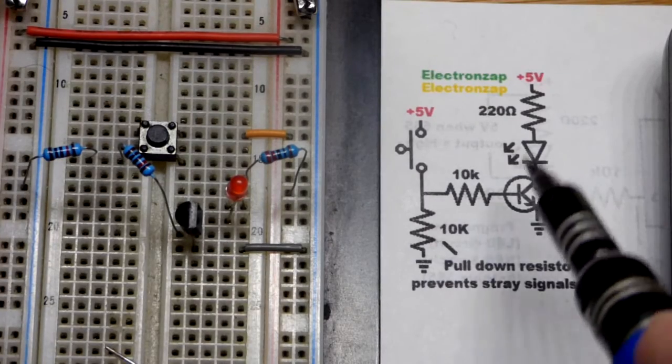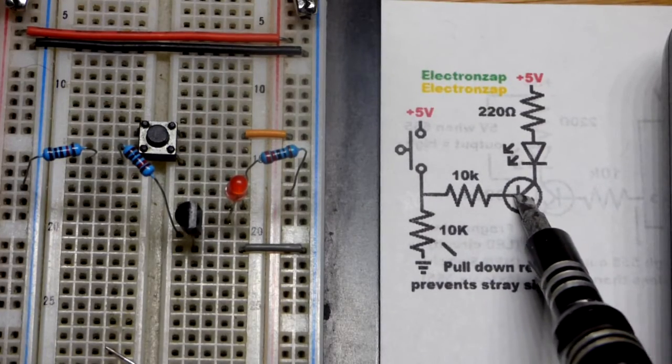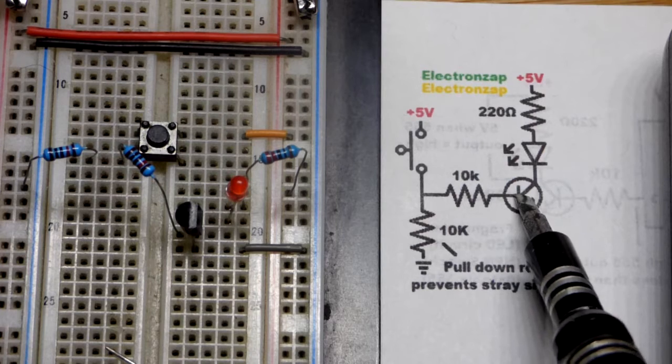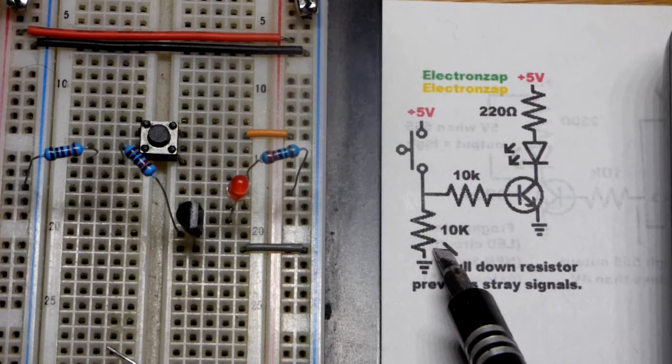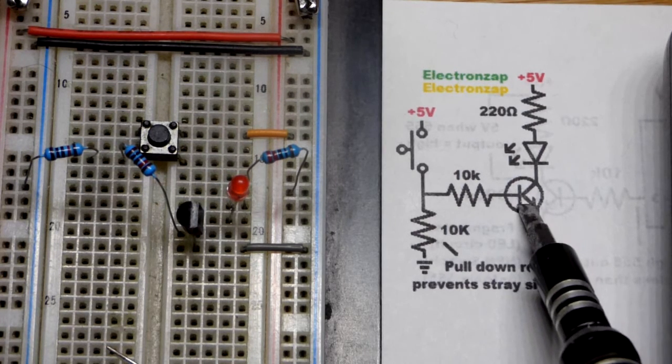So now in this video, we have an NPN bipolar junction transistor wired as a switch with a pull-down resistor. We'll get to what that means.